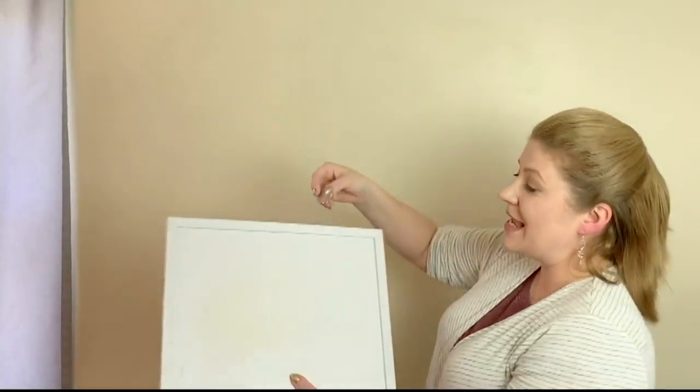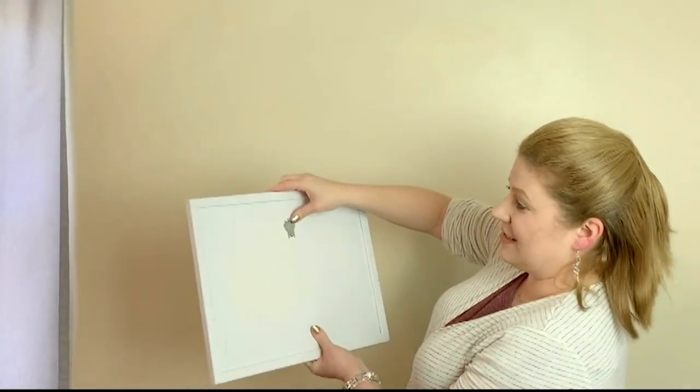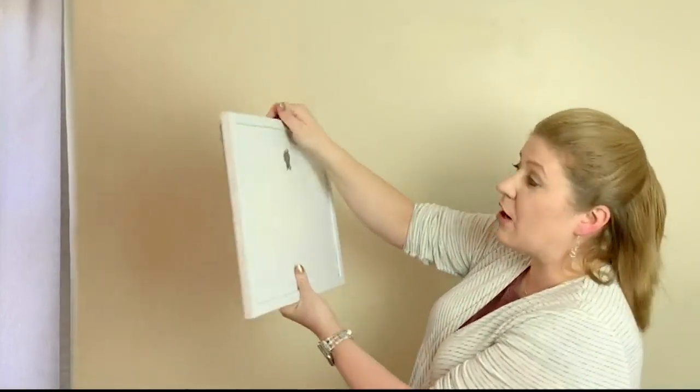So all you need to do is place it on your drywall, press it in where you want it, till it's flush, and look, they don't even go through the back of the drywall. They are ready to hang 20 pounds of weight. So let's take a look at hanging some pictures on my wall at home.